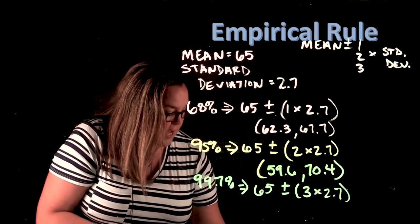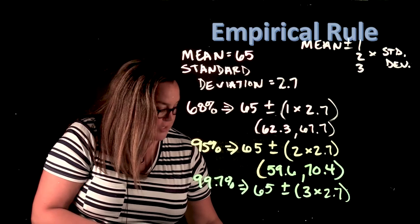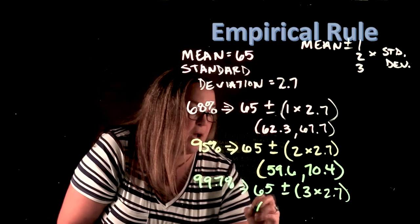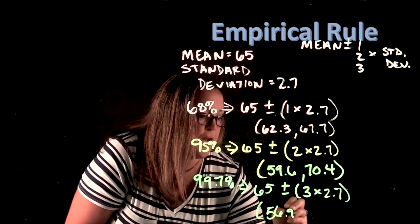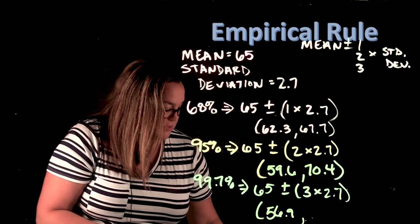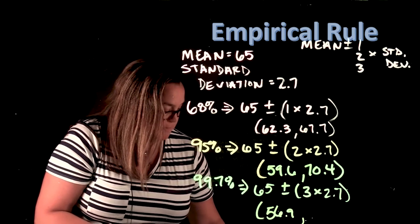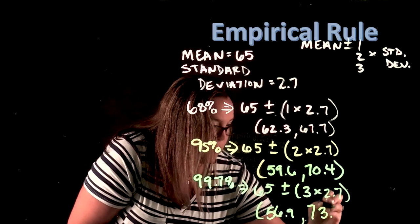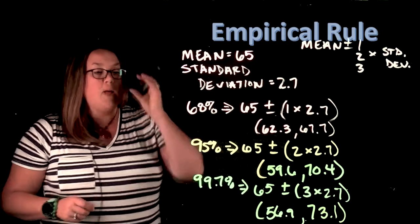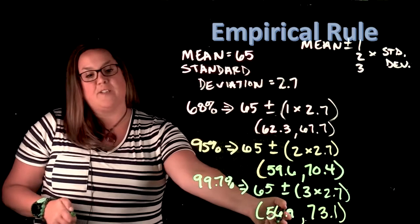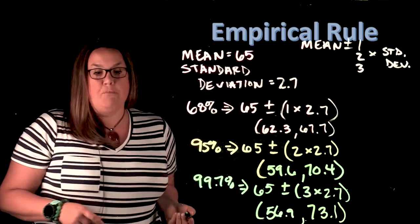So when you do 65 minus three standard deviations, we would come up with a lower bound of 56.9, and if you do 65 plus three standard deviations, you would come up with 73.1. So that means you can say 99.7% of female heights are between 56.9 and 73.1 inches.